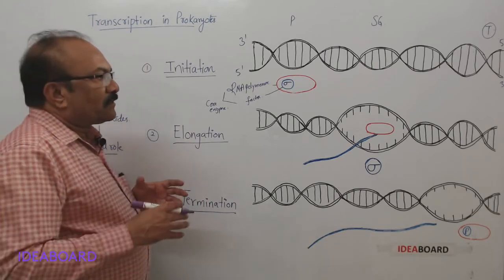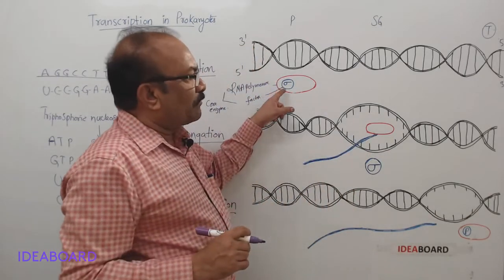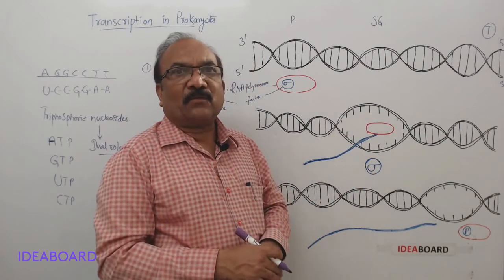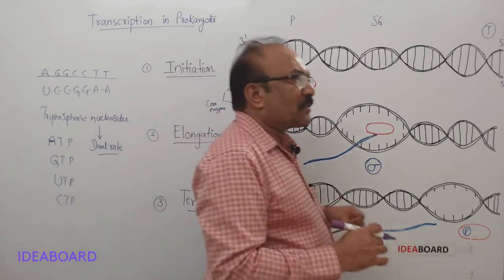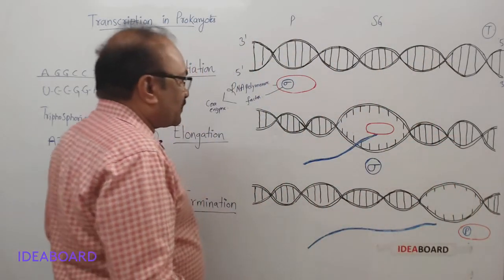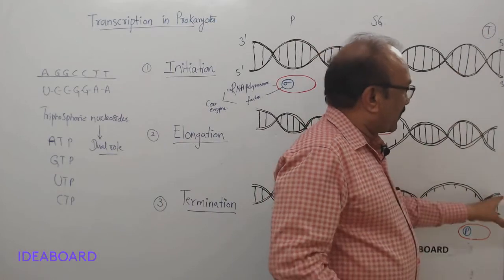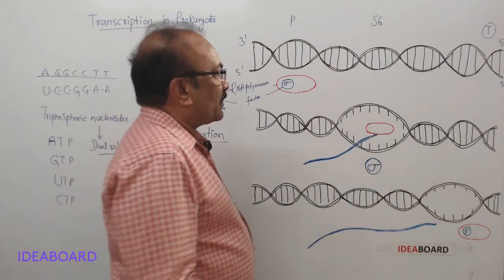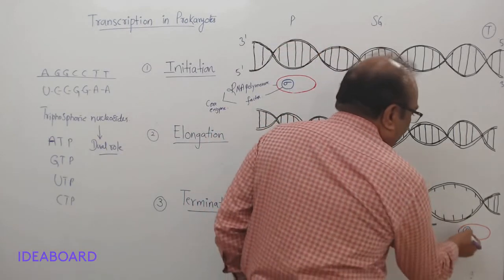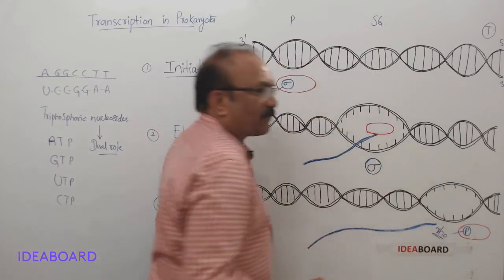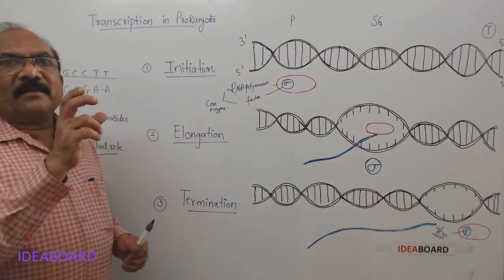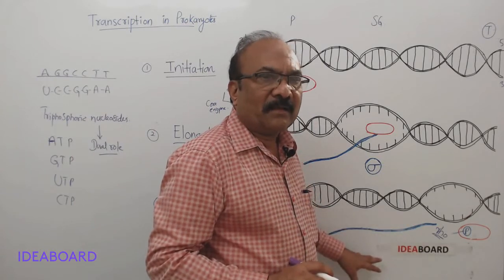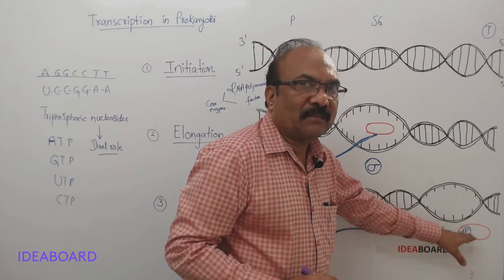Once the formation of the strand starts, the sigma factor comes out. Now, this RNA polymerase enzyme — that is the core enzyme alone — will catalyze the reaction. And as soon as it approaches the terminator site, one factor will add up to this core enzyme — that is the rho factor. The rho factor will recognize the terminator site, and as a result, the nascent RNA is released into the cytoplasm, and the enzyme along with the rho factor is also released.